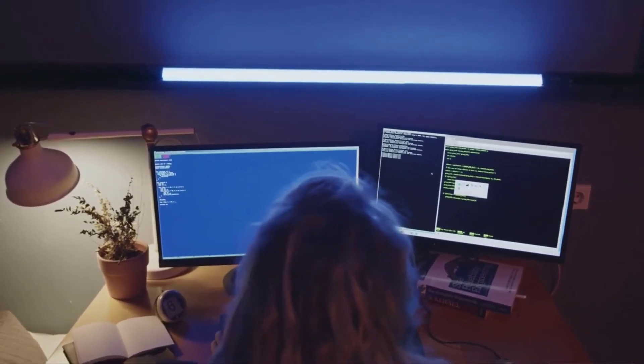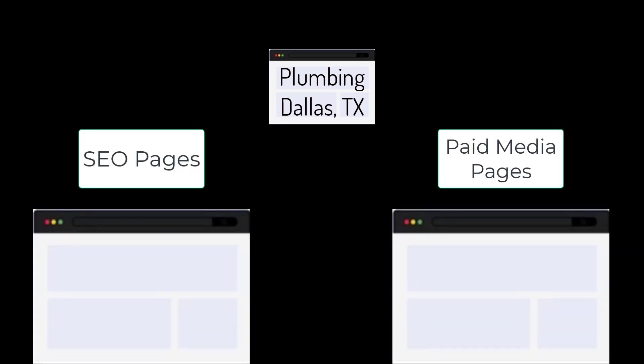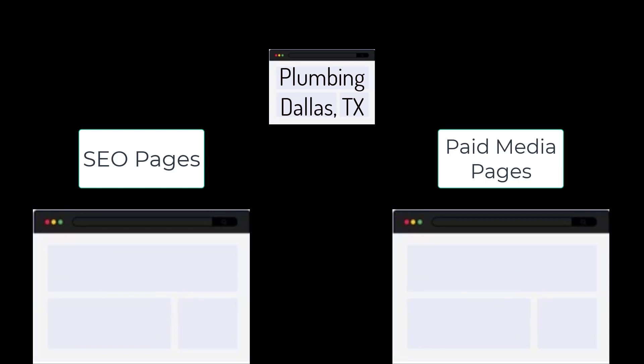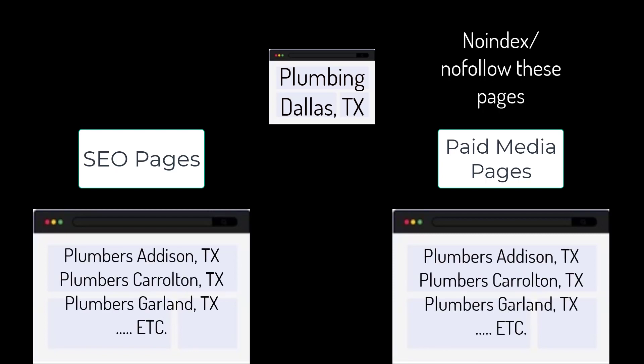For paid advertising, we may have a single concept we want traffic for — like plumbing in Dallas, Texas — but in this broad category we will have different landing pages for paid media and SEO, such as emergency plumbers Dallas Texas, 24/7 plumbers Dallas Texas, plumbing contractors Dallas Texas. And even this can be broken into different regions like Addison, Carrollton, Garland, etc.